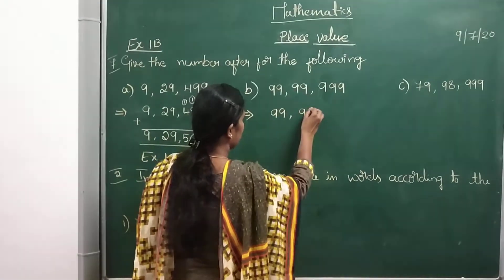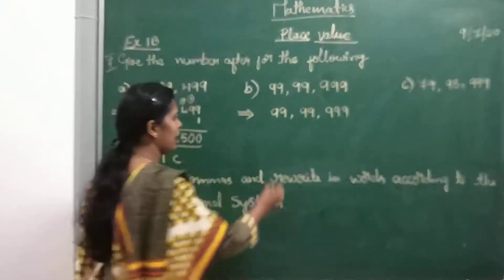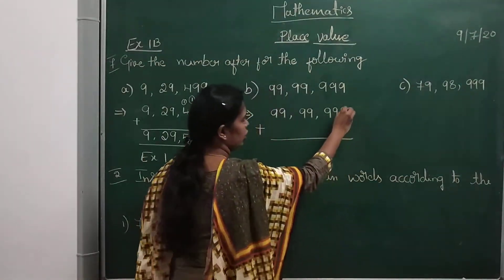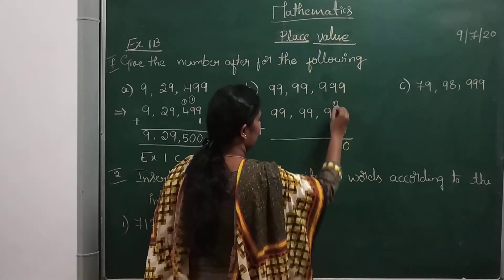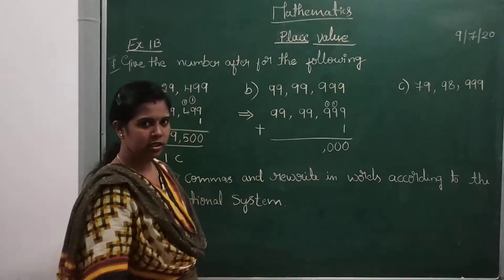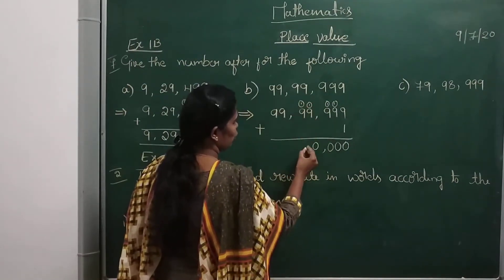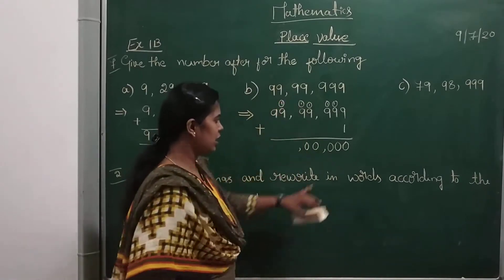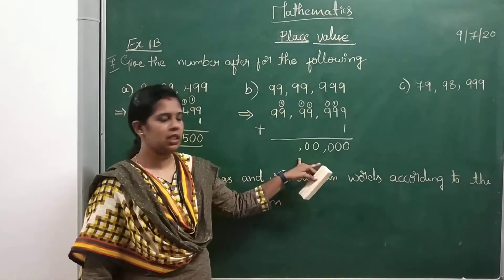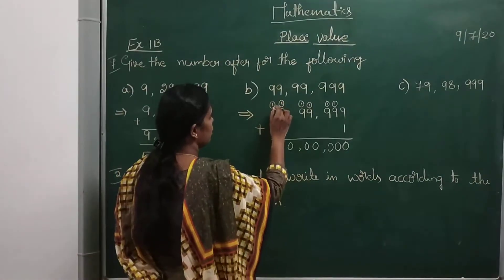Next question: 99,99,99,999. See — all the digits are 9s. We add 1 to this number. 9 plus 1 is 10, carry 1. 9 plus 1 is 10, carry 1. Again 9 plus 1 is 10, carry 1. Again 10, carry 1. 9 plus 1 is 10, carry 1. Don't forget to insert commas — it's very important. The answer is 9,99,00,000.